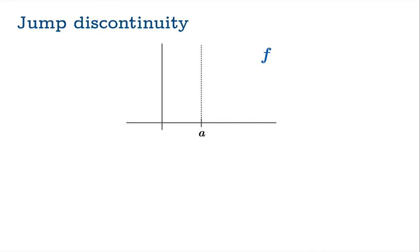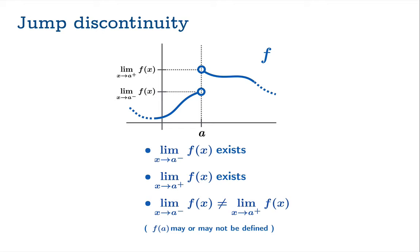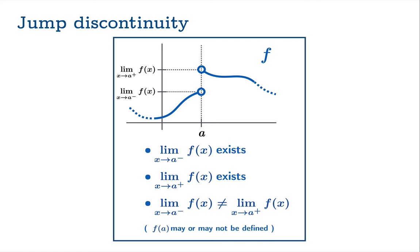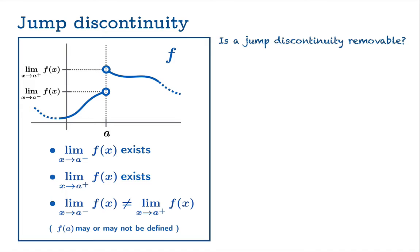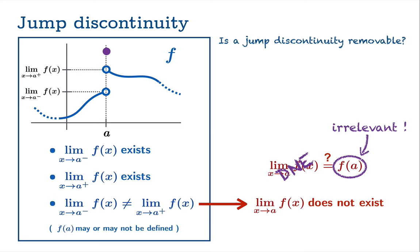Let's look at a jump discontinuity. In this case, the limiting value as you approach the argument from the left side exists, and the limiting value as you approach the argument from the right side exists, but the two do not match each other. The function value at a may or may not be defined, but it really doesn't matter because the limiting value of the function clearly fails to exist. Now, is a jump discontinuity removable? Since the limiting value of the function fails to exist, it doesn't matter what the value of the function is. You could define it anywhere you like, but you're still not going to have the limiting value match up with the function value. So the function value is irrelevant and the discontinuity is not removable.